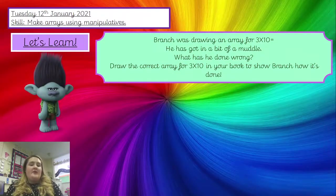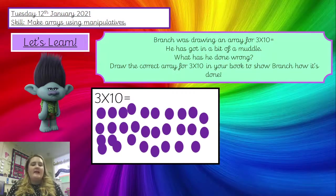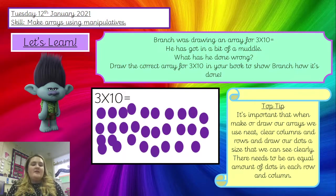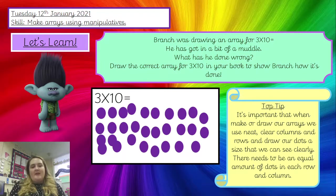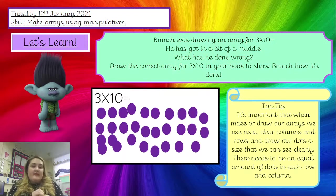Branch was having a go drawing an array for three lots of ten — so three times ten — but he's got in a bit of a muddle. Have a look at his array and think: what has he done wrong? How does this array look different to the arrays we've looked at previously? Think how many mistakes has he made. His array isn't as neat as the other arrays. He's got different amounts of dots in the rows and different amounts in the columns, so they are not in nice equal columns and rows. We've also got some dots that are overlapping, which makes it really difficult to count. When we draw our arrays or make them using our counters, it's really important that we use neat, clear columns and rows, and we draw our dots a size that we can see really clearly.